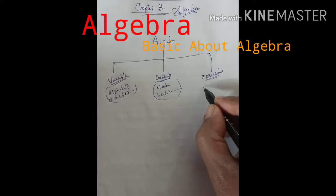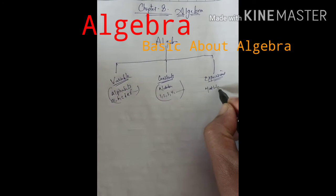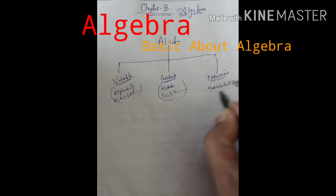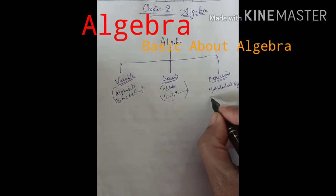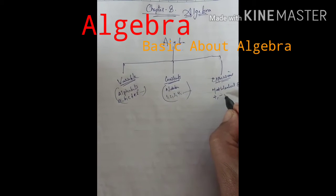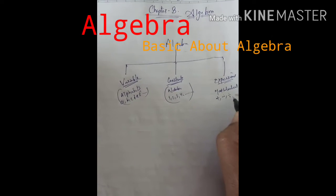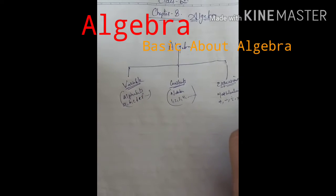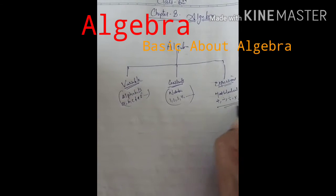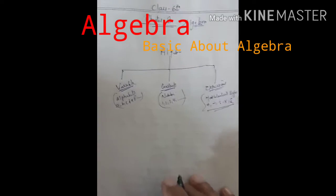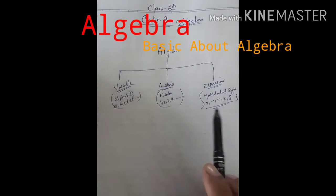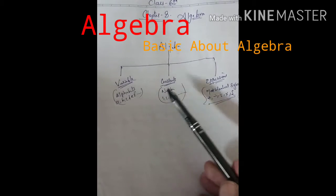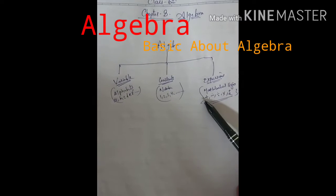And last, expression। Expression मतलब mathematical signs — mathematical sign मतलब plus, minus, divide, multiply, brackets। That's it। तो algebra mainly 3 चीज़ों से मिलकर बना होता है: variable, constant, और expressions।